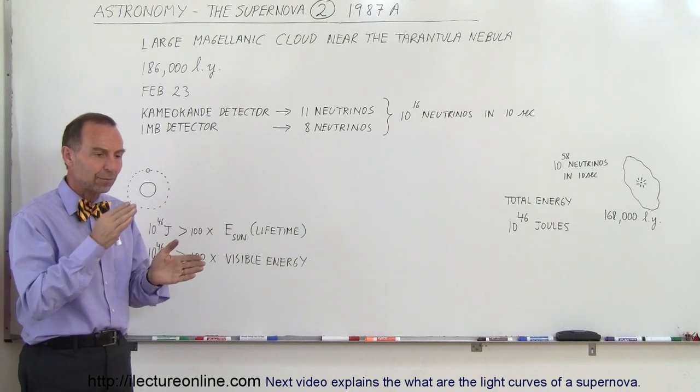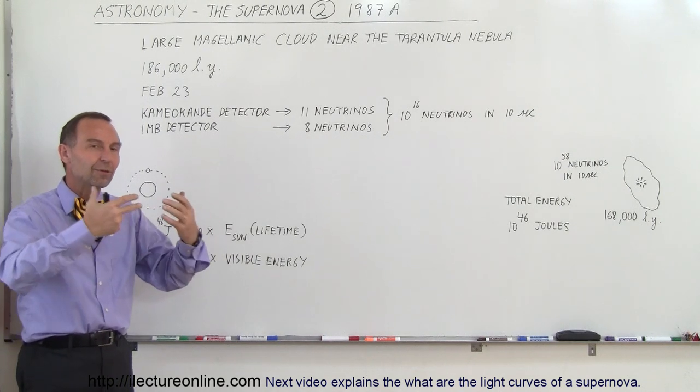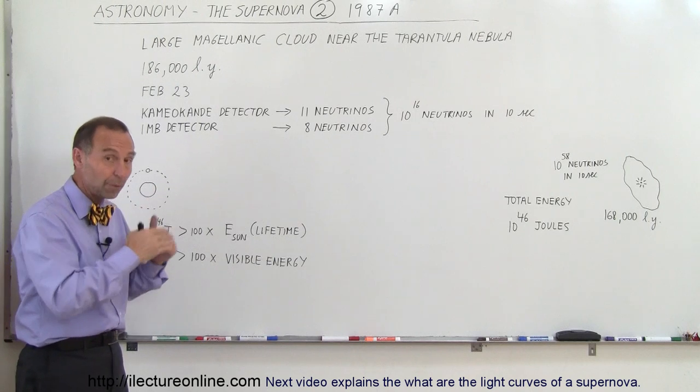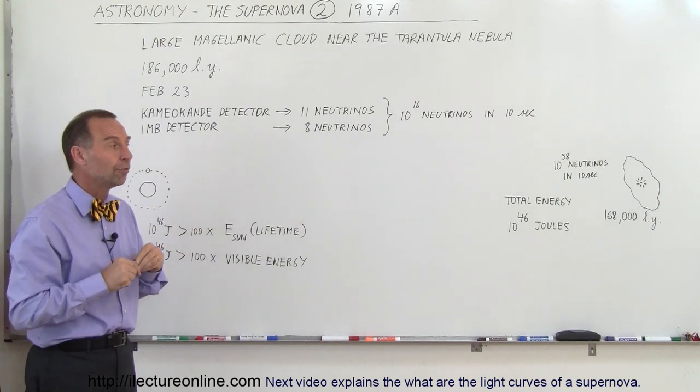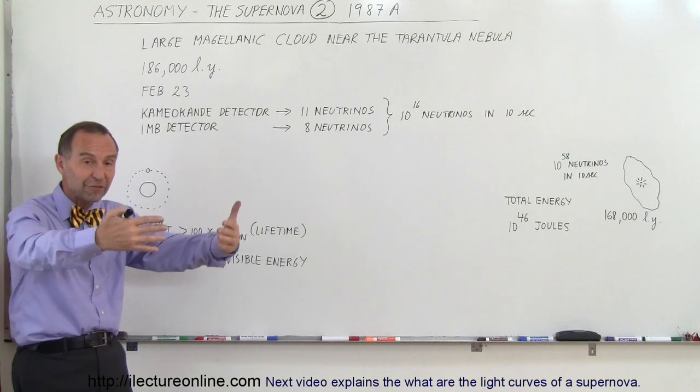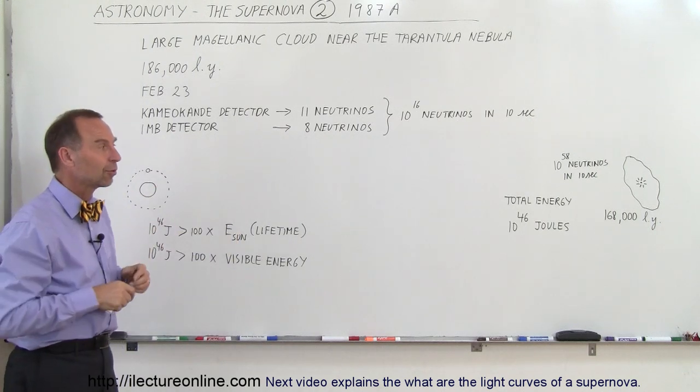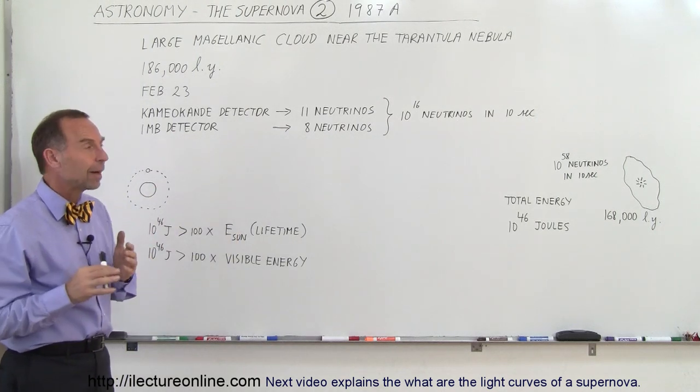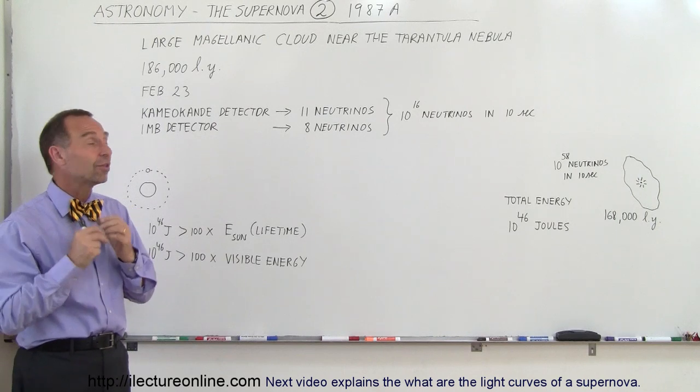So there was a three-hour difference between when we received a burst of neutrinos, presumably from the supernova in the Large Magellanic Cloud, and from the visible light that hit us about three hours later. And what was amazing about it is the number of neutrinos that were detected.